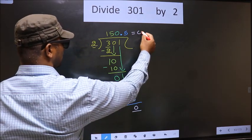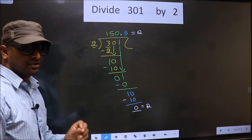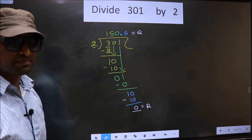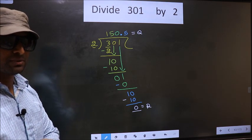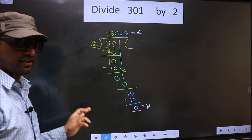So this is our quotient and this is our remainder. Did you understand where the mistake happens? You should not do that mistake.